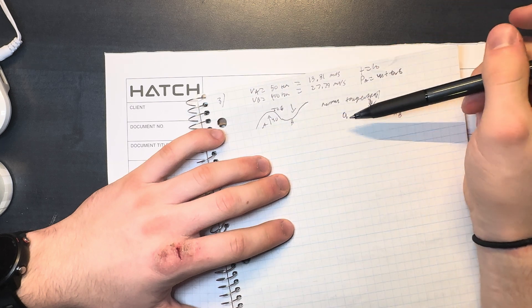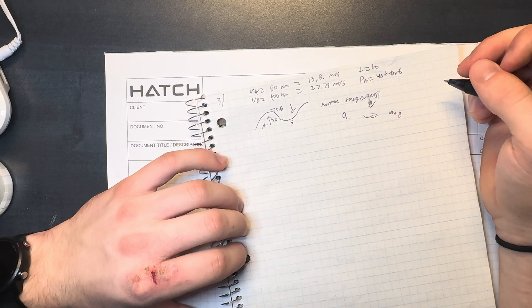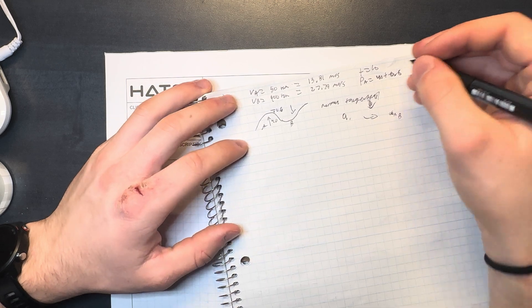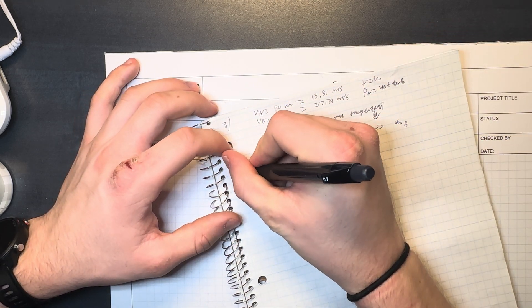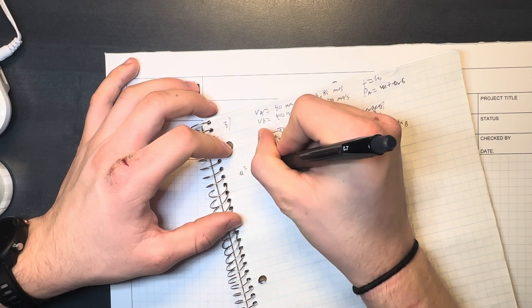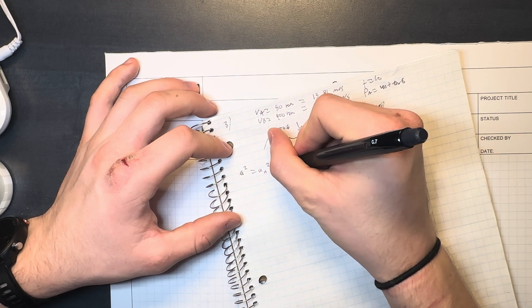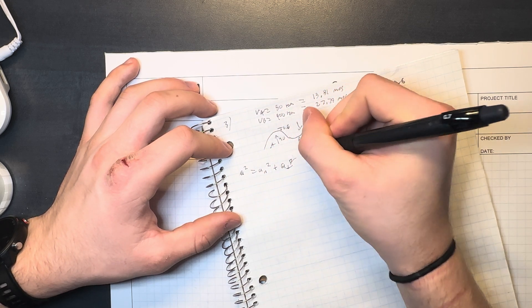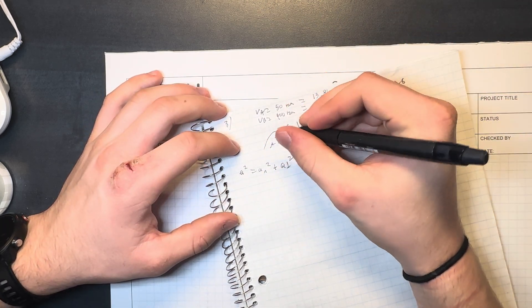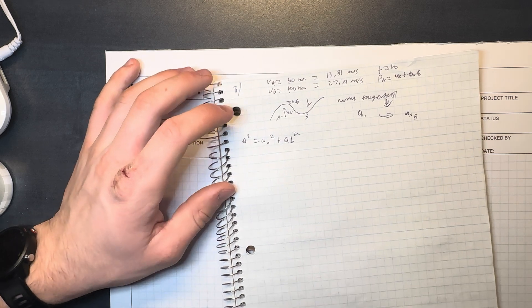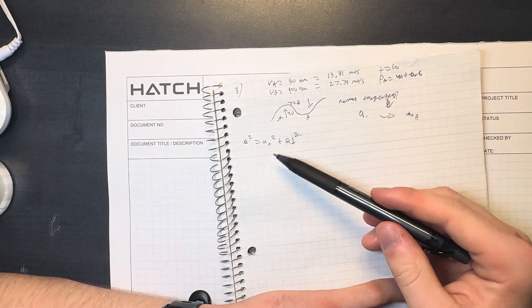So we're going to take the acceleration from when we do know it, we're going to find this variable. Where is the equation? We know that the equation is a squared equals a_n squared plus a_t squared.